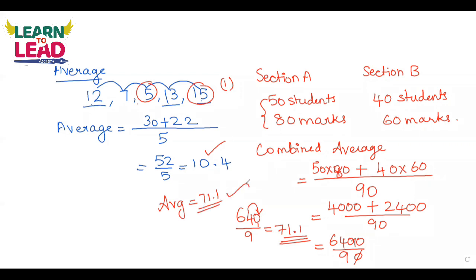Do you understand this? So the combined average is the total marks divided by the number of students. That is the combined average formula. Now let me solve another example for you.